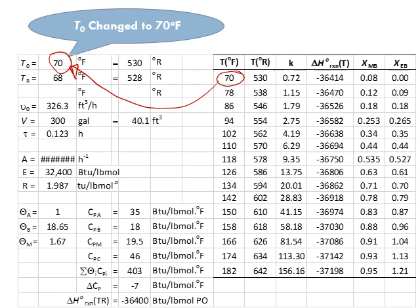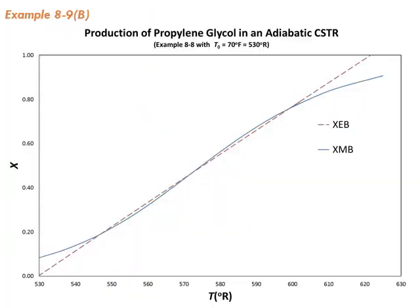What are we looking for? We're looking for the temperature where XMB and XEB are equal. Let's plot it - and now we see something strange.